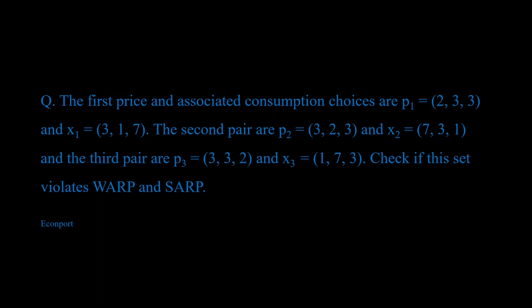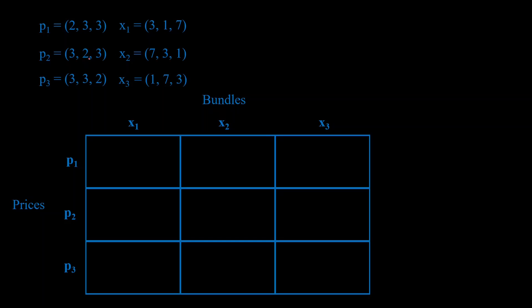We are basically given three pairs of prices and consumption bundles: P1 along with its consumption bundle X1, P2 and its consumption bundle X2, P3 and its consumption bundle X3. We want to know if this data set violates WARP and SARP. I have the prices in this column and the respective corresponding bundles over here.